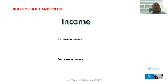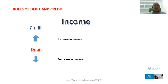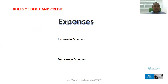Now, for income — it is like equity and liabilities. Increase in income, it's credit. Decrease in income, it's debit. What about expenses? Increase in expenses is debit. Decrease in expenses is credit.